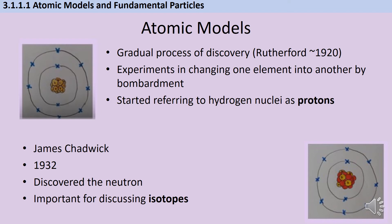Then, in 1932, James Chadwick discovered the neutron, and this was really, really important, because it allowed us to start discussing isotopes, those different versions of an atom that have the same number of protons, but different numbers of neutrons, and therefore different atomic masses.